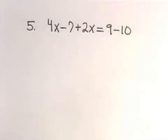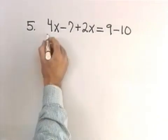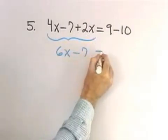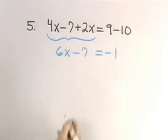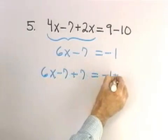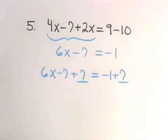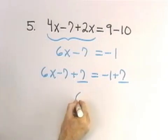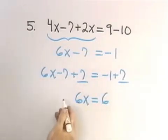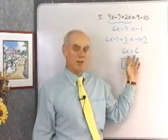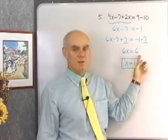Here's one more problem: 4x minus 7 plus 2x equals 9 minus 10. First, I'll simplify each side. 4x plus 2x is 6x minus 7 on the left, and 9 minus 10 is negative 1 on the right. I'll get rid of the negative 7 first: 6x minus 7 plus 7 equals negative 1 plus 7, giving 6x equals 6. Multiplying both sides by 1/6, the solution is x equals 1.